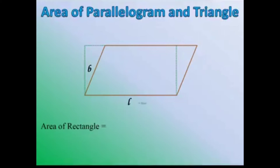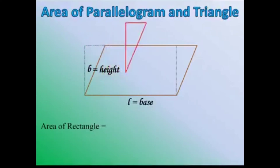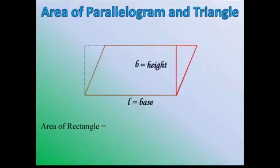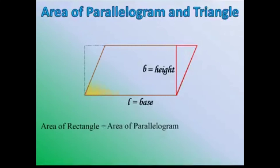If we just move any two vertices, keeping the other two vertices fixed, then we will get a triangular portion. If we move that triangular portion to the other side, we get a parallelogram. The length is equal to the base of the parallelogram, and the breadth will be equal to the height of the parallelogram.